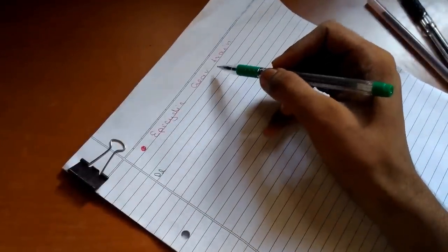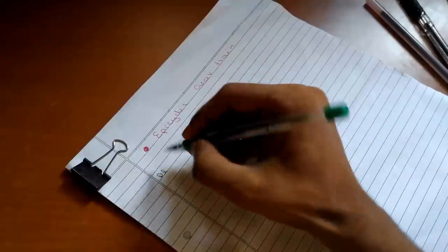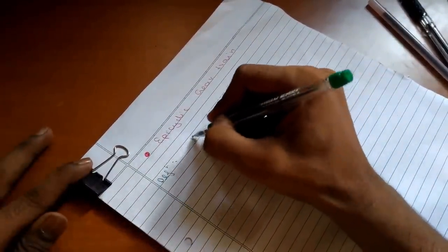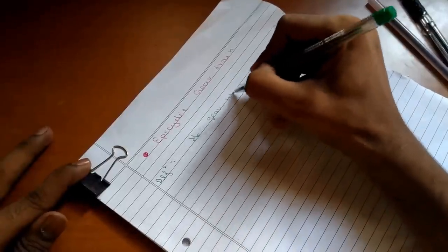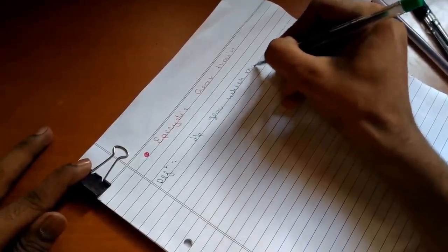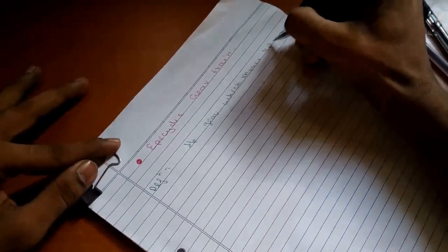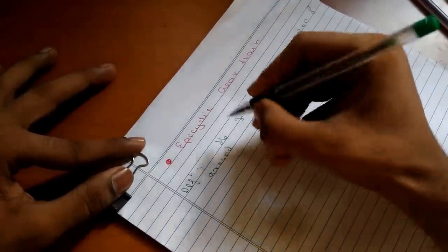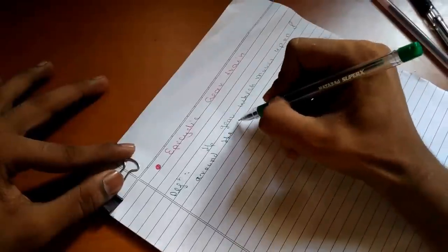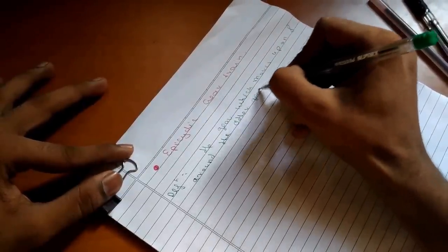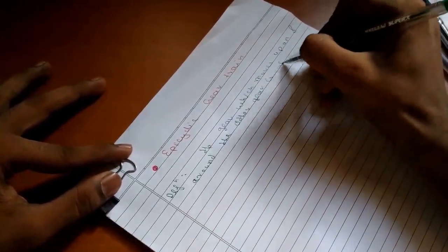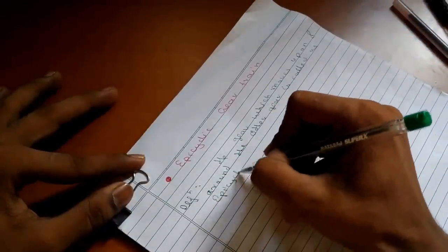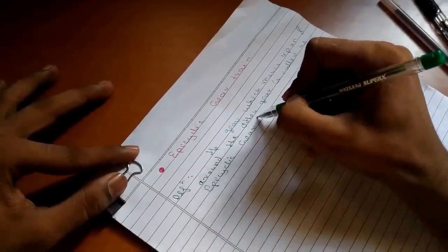It's about the epicyclic gear train in detail. The basic definition is that the gear which moves upon and around the other gear is called epicyclic gear train.